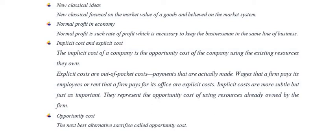The implicit cost of a company is the opportunity cost of using the existing resources they own. Explicit costs are out-of-pocket costs — payments that are actually made, such as wages a firm pays its employees or rent a firm pays for its office. Implicit costs are less obvious but just as important; they represent the opportunity cost of using resources already owned by the firm. Implicit cost plus explicit cost equals total opportunity cost.